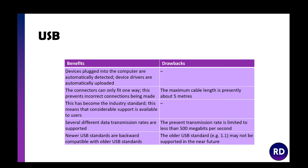USB is the industry standard, so most things use it. It supports lots of different transmission rates with different standards such as USB 1, USB 2, and USB 3, and the newer USB 3 still works with a USB 1 port. However, the present transmission rate is limited to less than 500 megabits per second, and as technology progresses the older USB standards may eventually lose support.